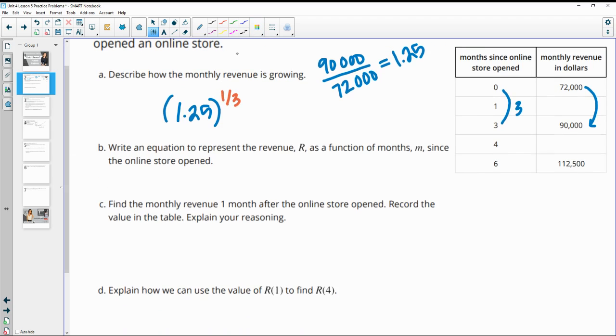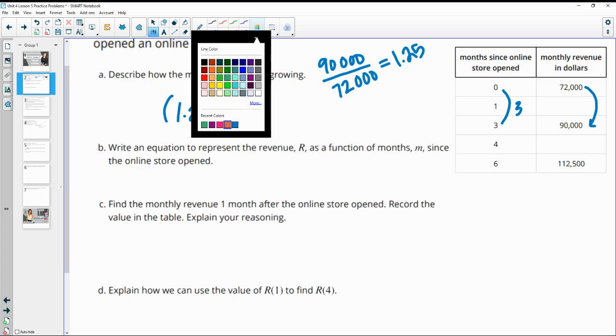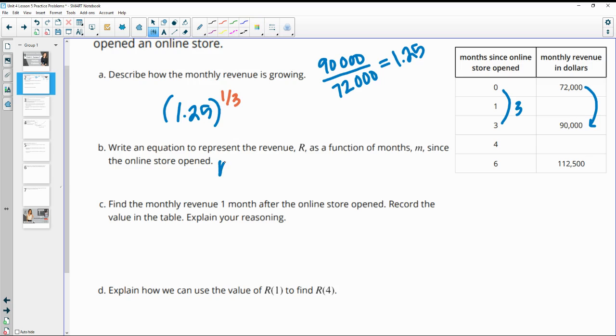So then let's write an equation to represent the revenue R as a function of months M since the store opened. So we've got the revenue as a function of months, and our initial revenue, the first, before it started or the initial time is 72,000.